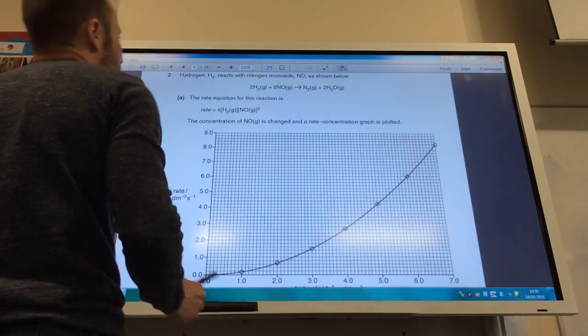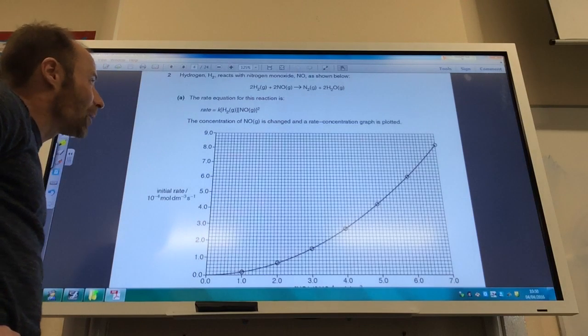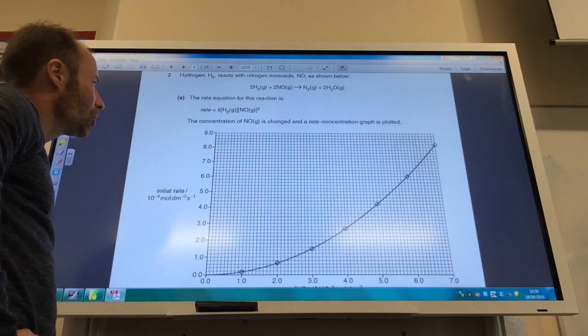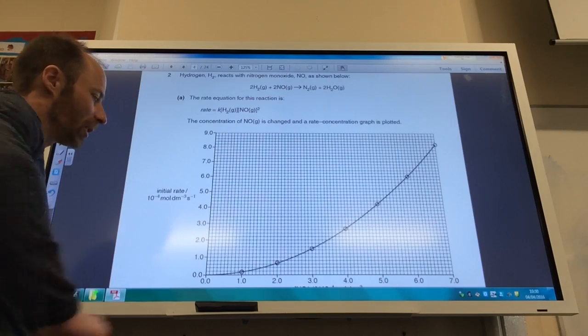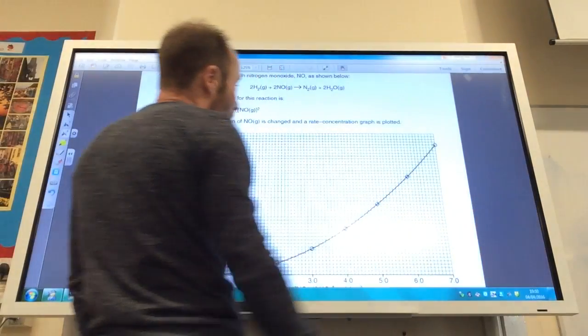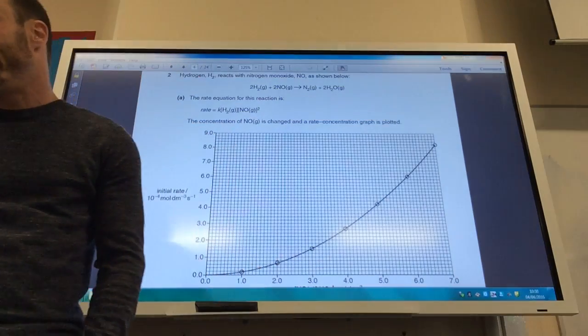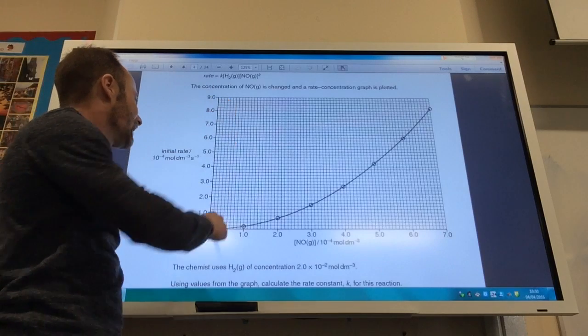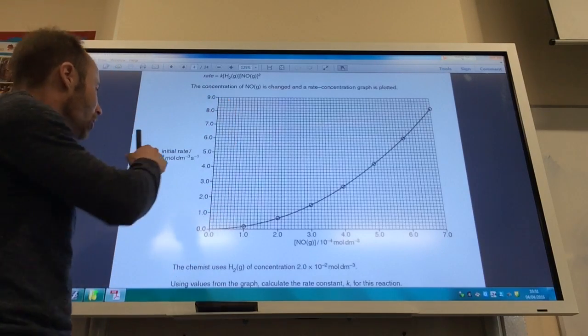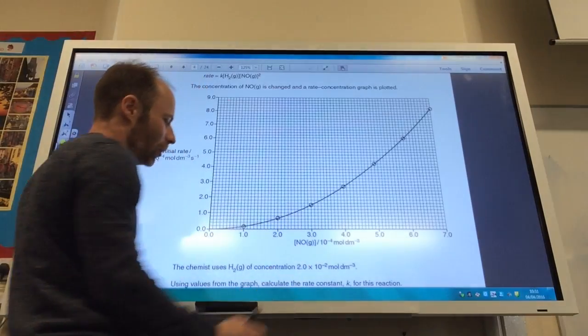Argon reacts with nitrogen monoxide as shown below, and they give me the rate equation for this. The concentration of nitrogen monoxide is changed and the rate concentration graph is plotted. So the concentration of nitrogen monoxide is along this axis, and the rate, the initial rate, is plotted along this axis here. Just be careful, this is all times 10 to the minus 4 going on here.